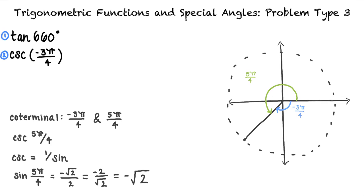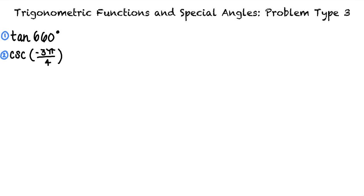So, our final answers are the tangent of 660 degrees equals negative square root of 3, and the cosecant of negative 3 pi over 4 equals the negative square root of 2.